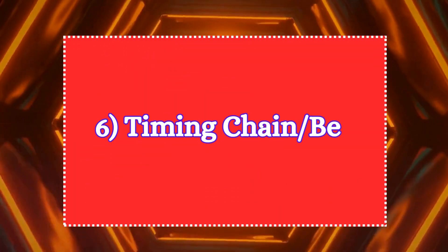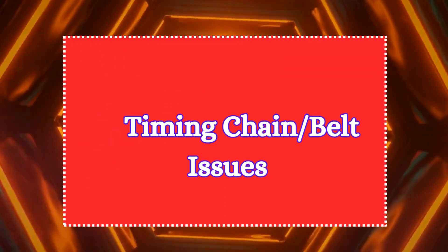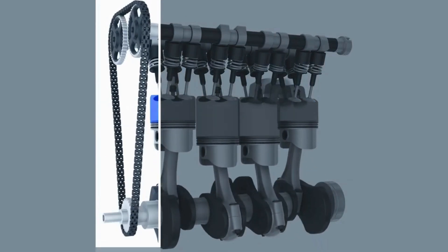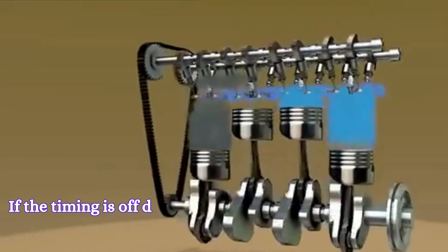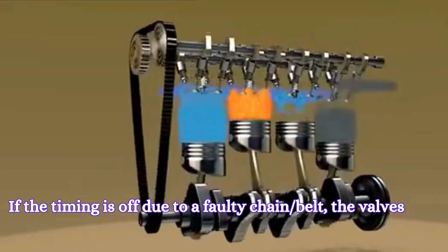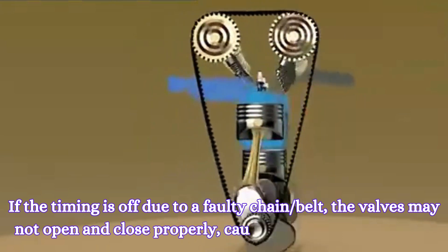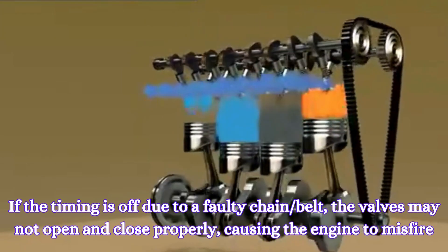Sixth, timing chain or belt issues. The timing chain or belt ensures that the engine's valves open and close at the correct times during the combustion process. If the timing is off due to a faulty chain or belt, the valves may not open and close properly, causing the engine to misfire.